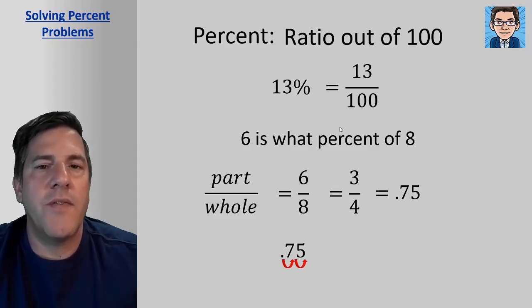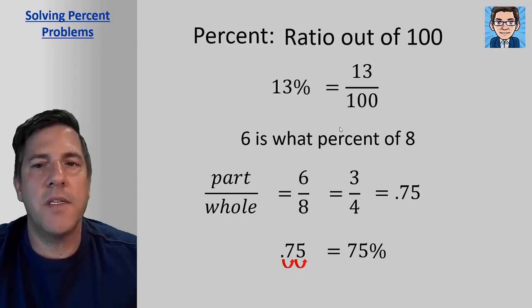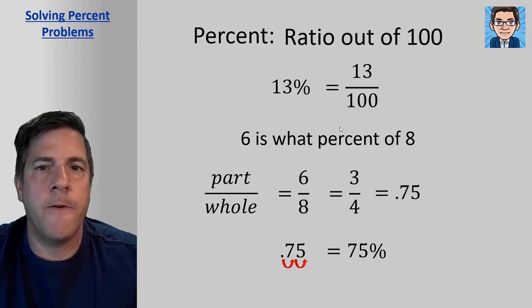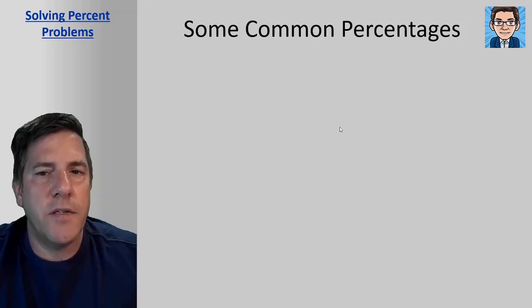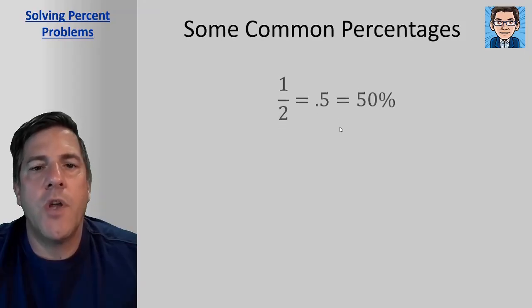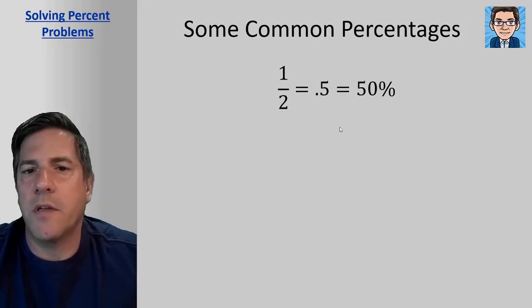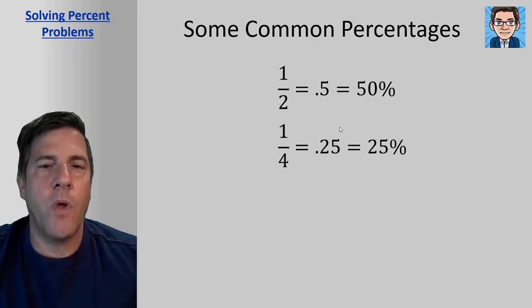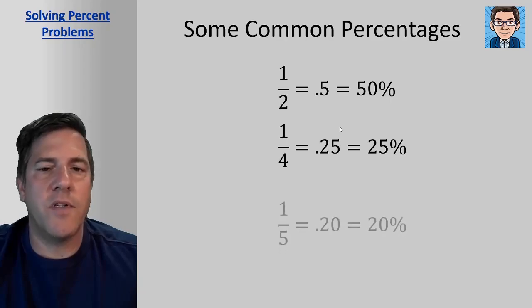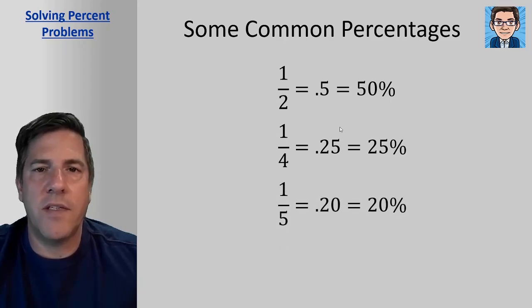So 0.75 as a percent is going to be 75%. So just to go over some common percentages, just know in these will help you solve things a little easier. One-half or 0.5 is the same as 50%. One-fourth or 0.25 is the same as 25%. One-fifth is the same as 20%. And then one-tenth is the same as 10%.